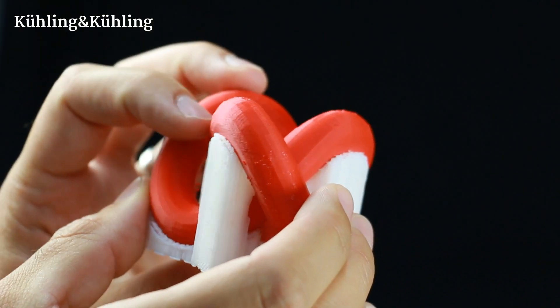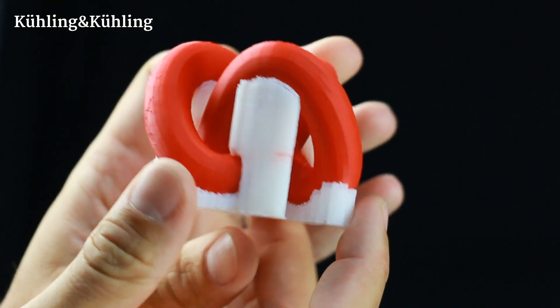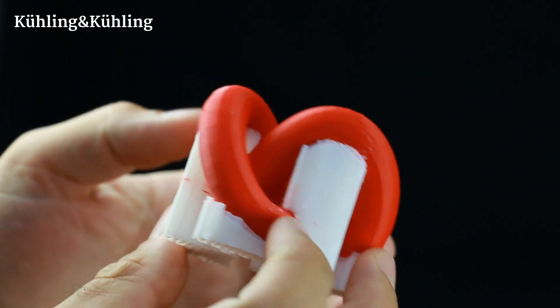In this video, we're going to show you how the RepRep Industrial 3D printer can print with soluble support structures on ABS models.